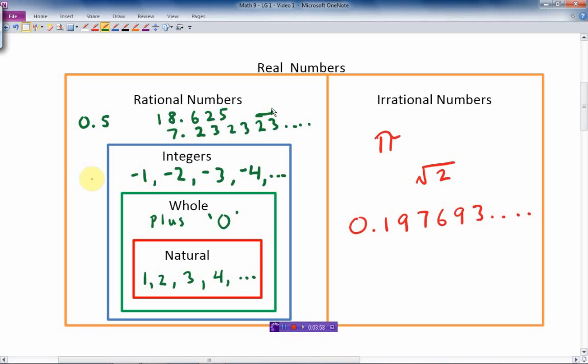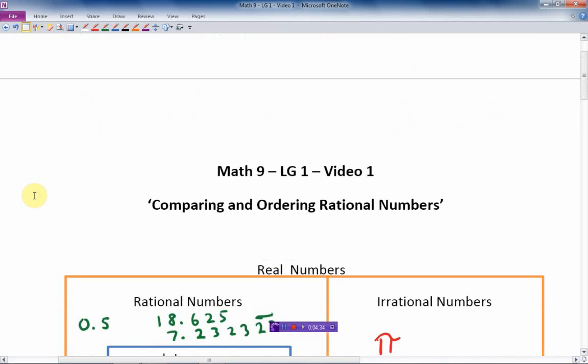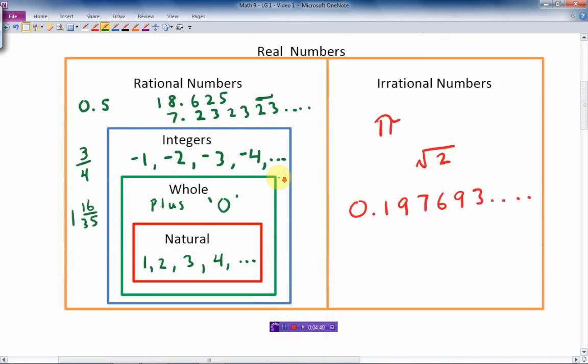You can write that as a fraction, as a mixed number in this case, with a whole number part and a fraction part. And so any rational number is any kind of fraction. So if I put the number 3 quarters, that's also a rational number. And a number like 1 and 16 over 35, that's also a rational number. Anything written as a fraction or a mixed number like that. So that gives us a base for what we're talking about when it comes to rational numbers. And that's what we're going to be dealing with: comparing and ordering rational numbers. So we're not dealing with irrational numbers here.